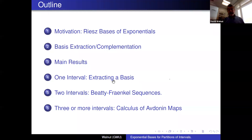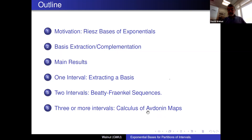The proof uses the Weyl equidistribution theorem — the Weyl-Khinchin theorem on equidistribution — which is used to extract the basis. Then there's a very beautiful result from number theory, related to what are called Baby-Frankl sequences. And then the main tool that makes all this go through is Avdonin's theorem on perturbations of exponential bases. We will introduce a calculus of Avdonin maps which will allow us to prove our theorem for more than just two intervals.